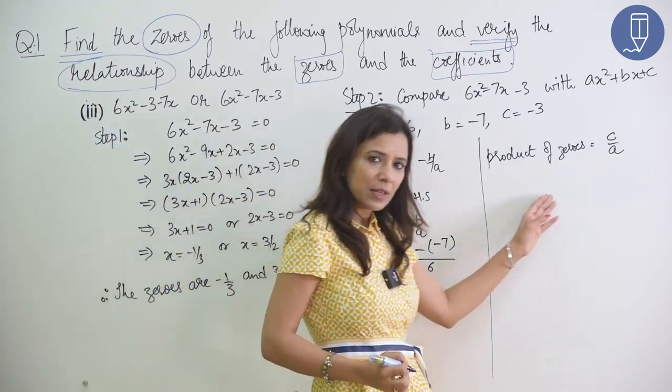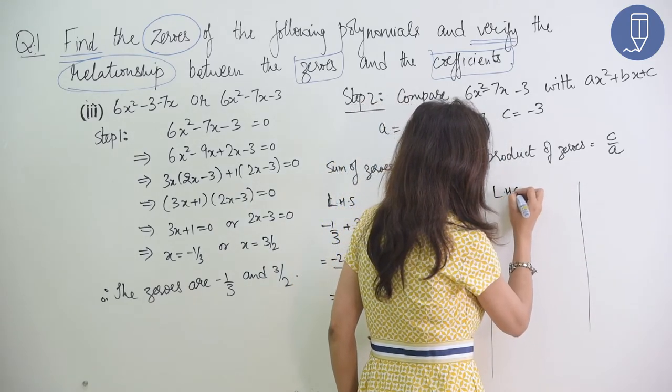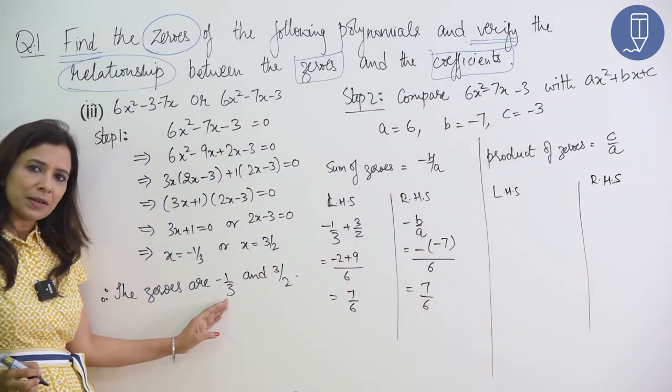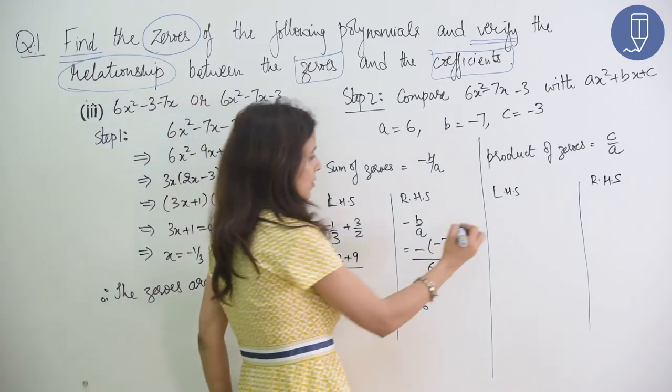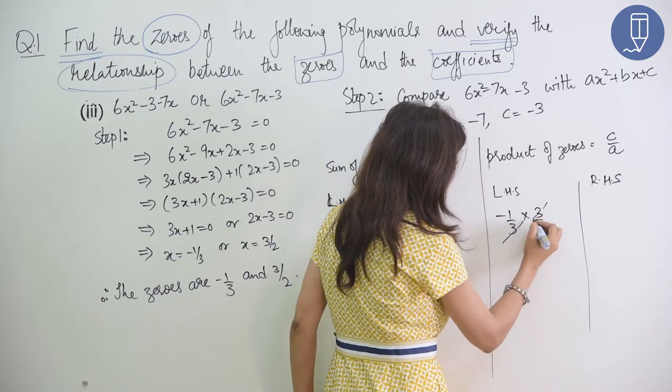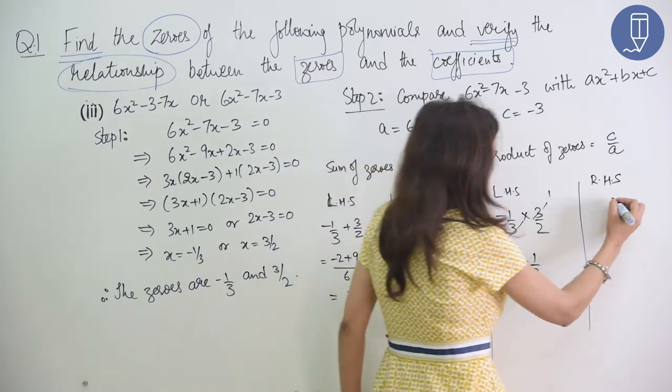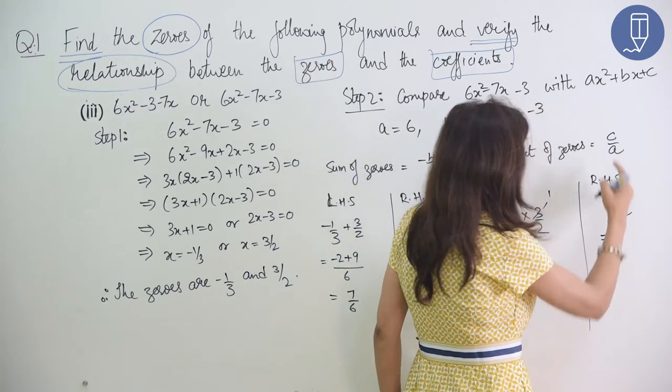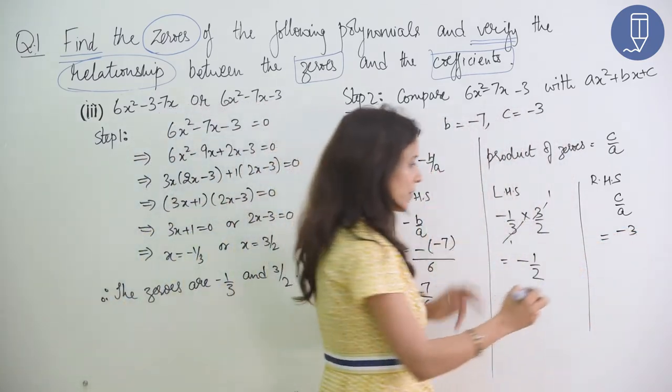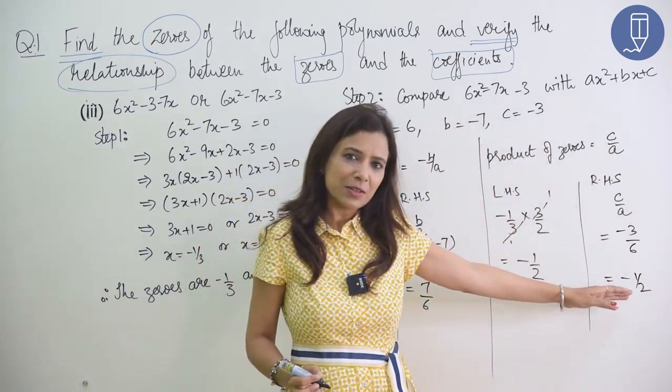Very good. Now let's see product of zeros. So, here also. Left hand side. Right hand side. Left hand side is product of zeros. Zeros are minus 1 by 3 and 3 by 2. So, minus 1 by 3 into 3 by 2. This got cancelled. So, we got minus 1 by 2. Right hand side is c by a. c's value is minus 3. a's value is 6. So, here also we have minus 1 by 2. Again, left hand side is equal to right hand side.